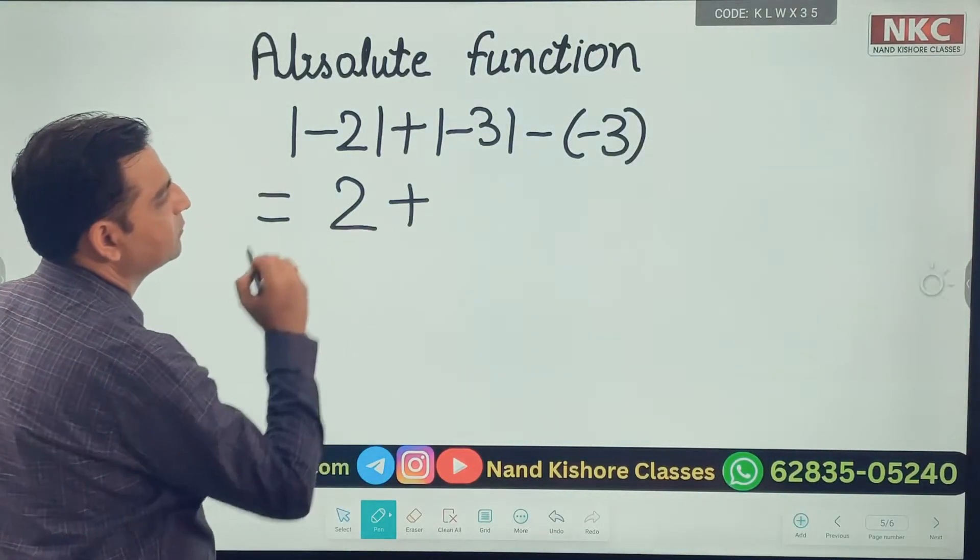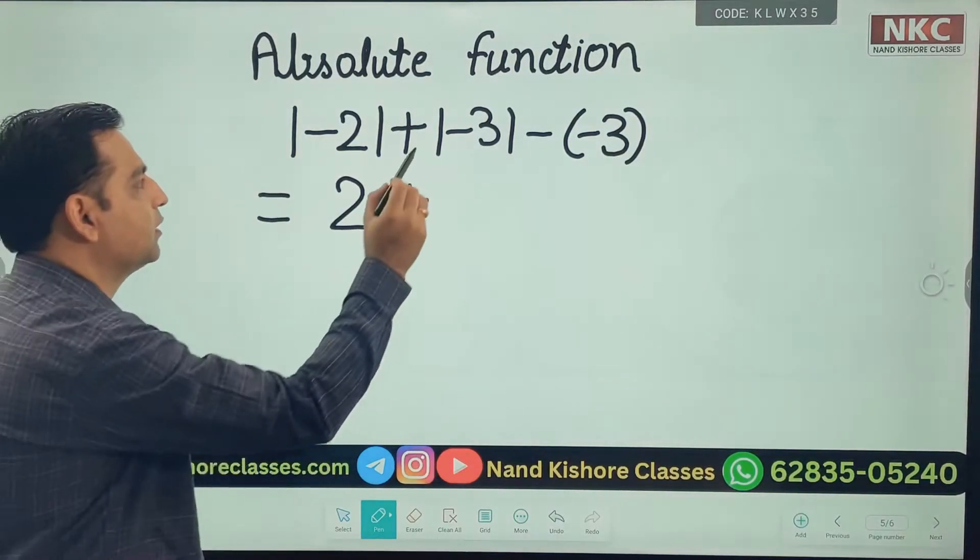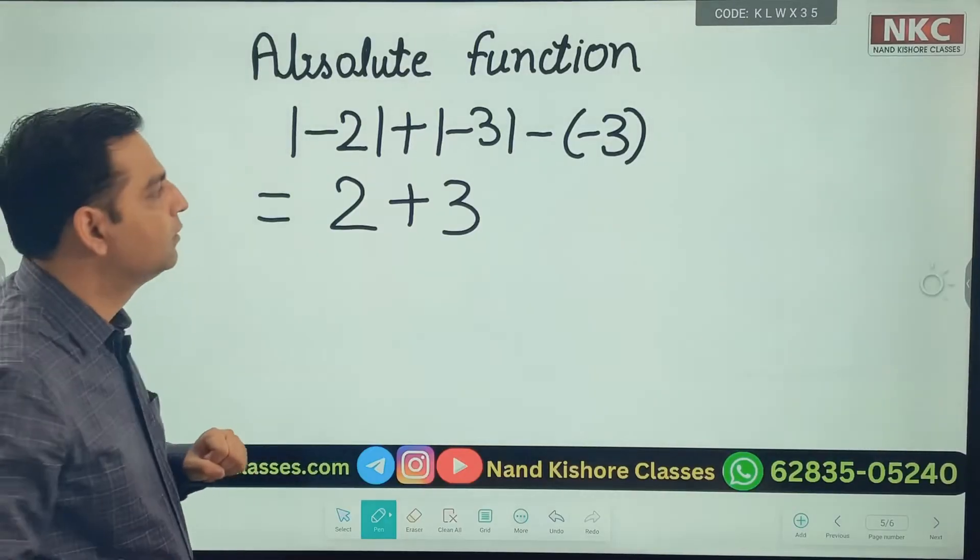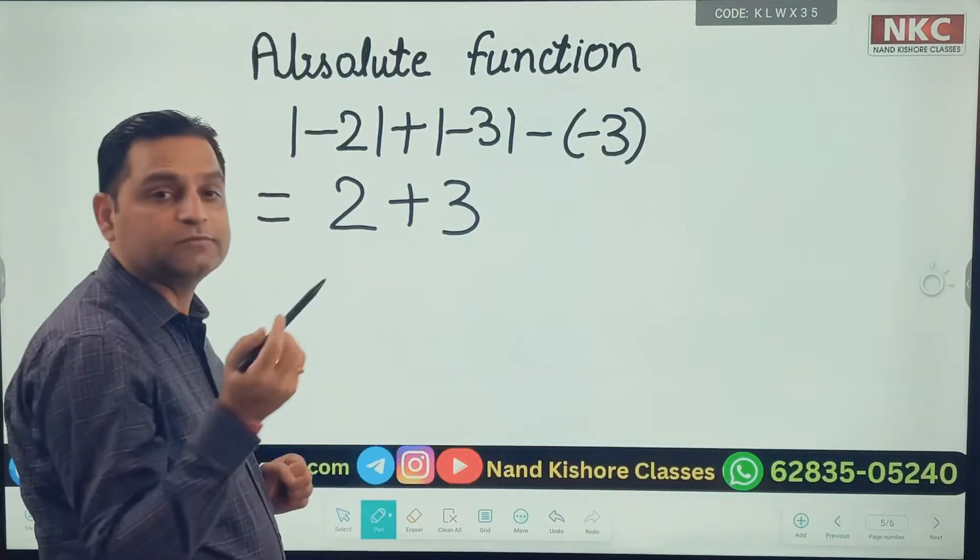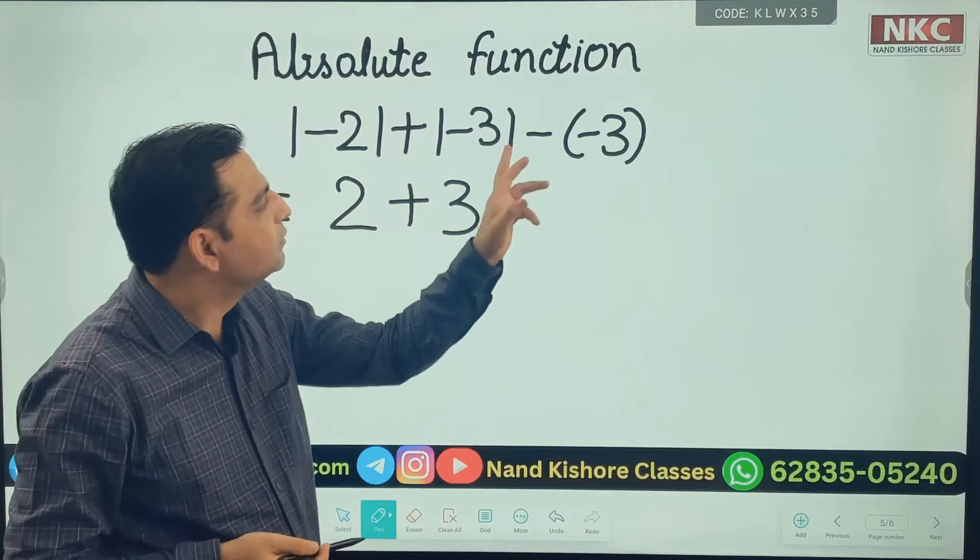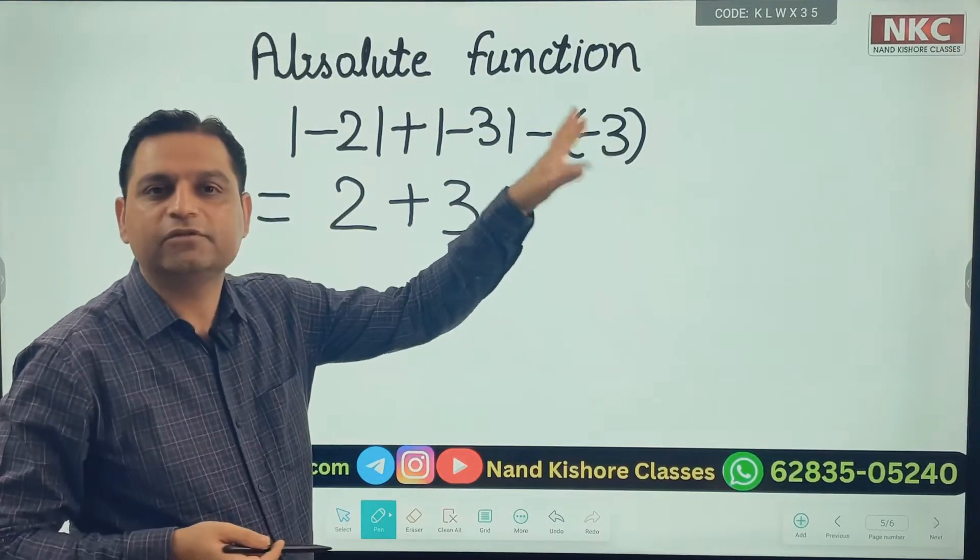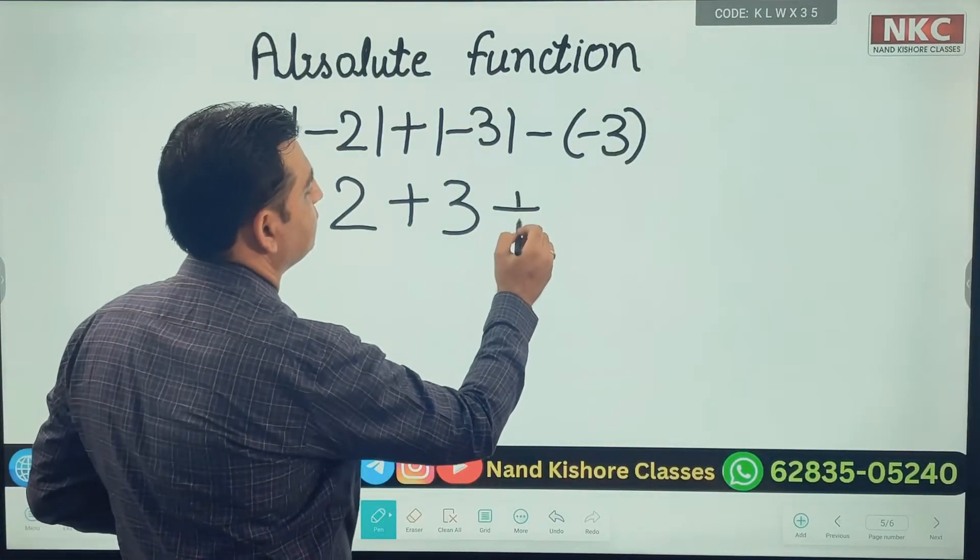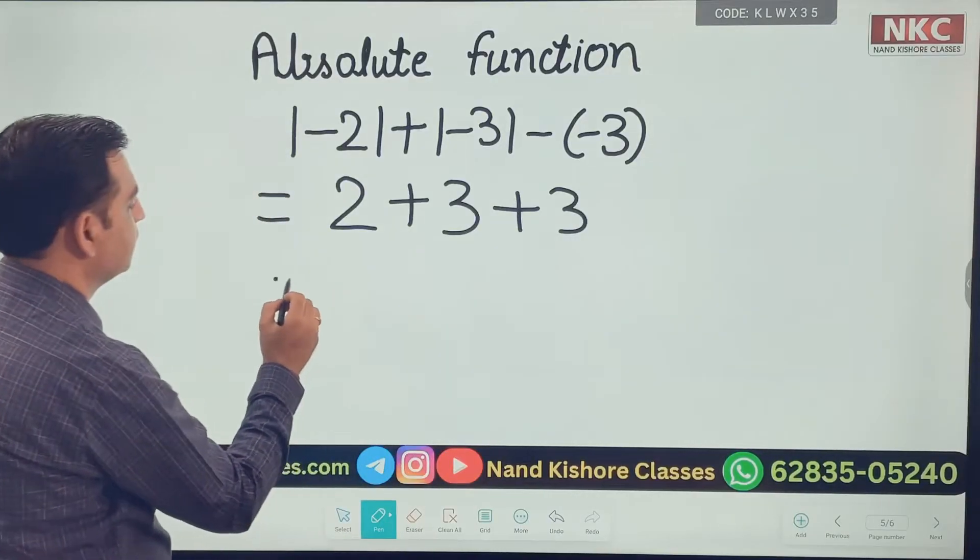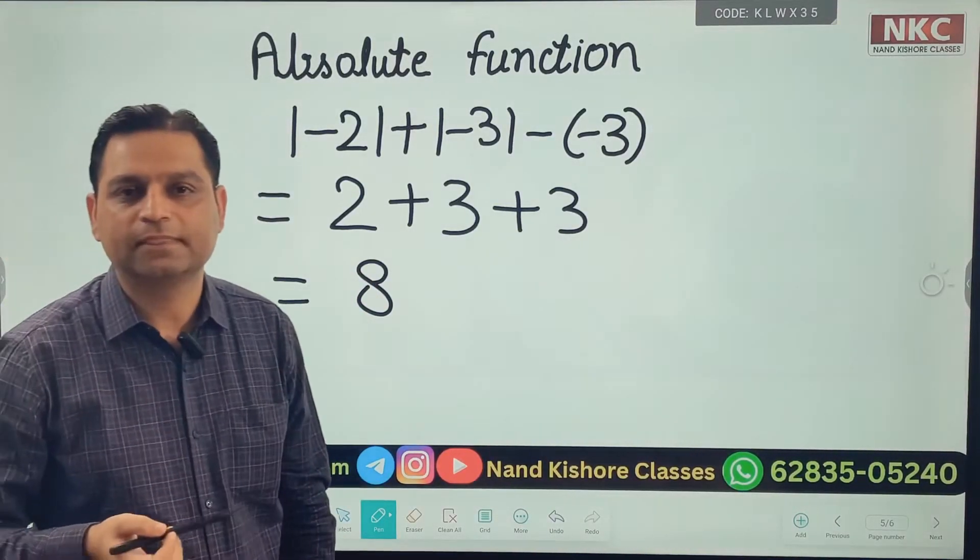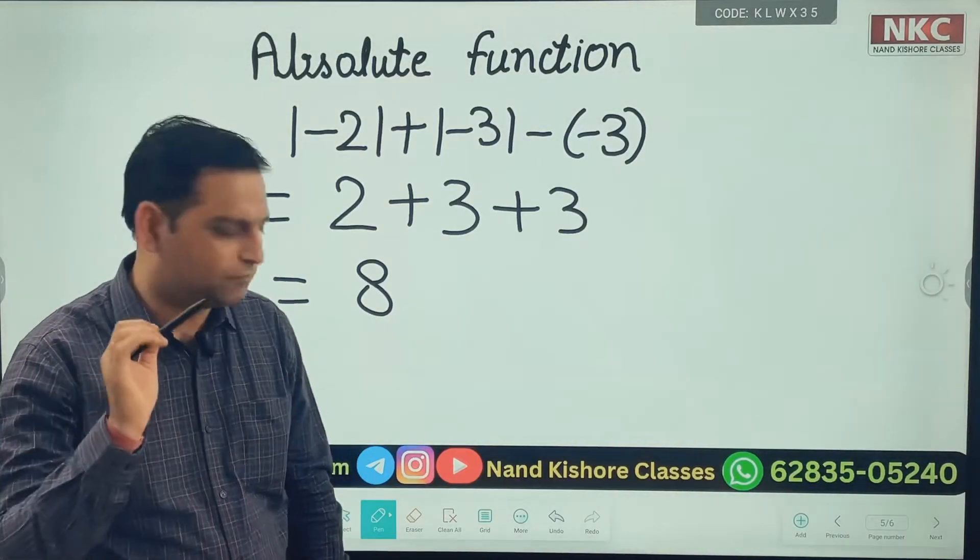Then plus sign is there. Again negative changes to positive, we are having only three. And then sometimes students get confused, but do remember this is just a round bracket, the normal bracket only. This is minus multiplied with minus. Minus and minus changes to plus. Plus three. So your final answer will be eight only. I hope you are comfortable with this question.